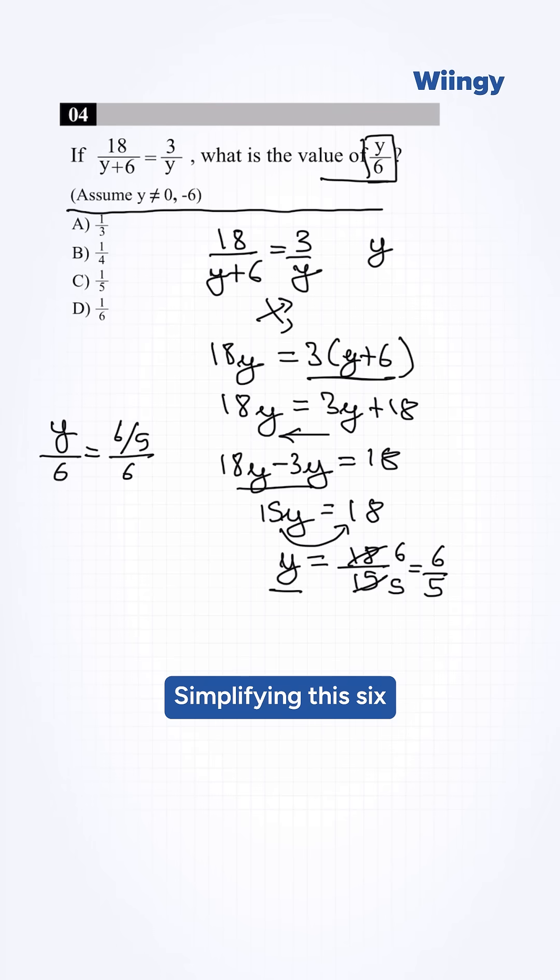Simplifying this: 6 by 5 into 1 by 6. Simplifying this, it will become 6 by 30. Dividing this by 6, 6 ones are 6, 6 fives are 30. It will become 1 by 5.